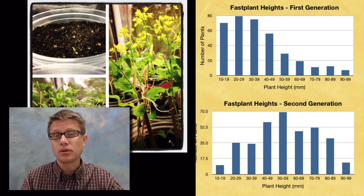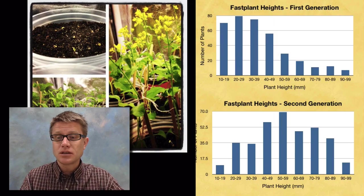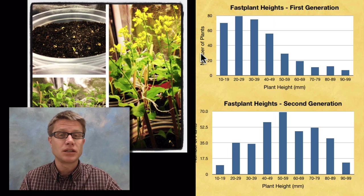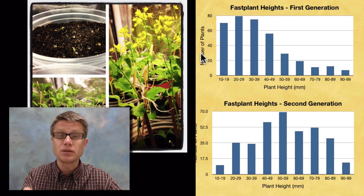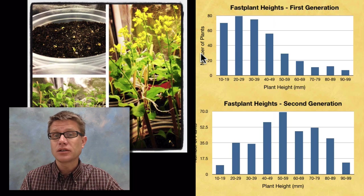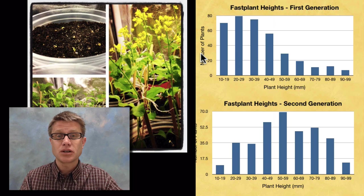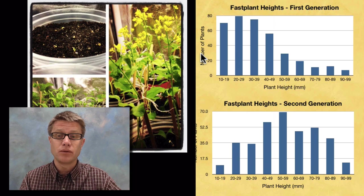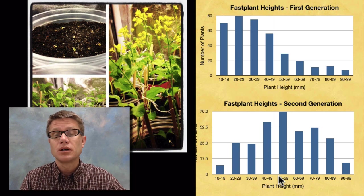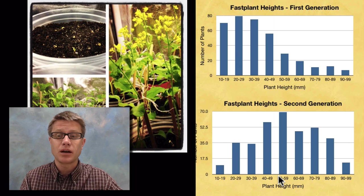In my lab, we were looking at height. So this is plant height in millimeters and the number of plants in the classroom that each have different heights. Then what you do is choose just the tallest plants to breed for the next generation. You're selecting those traits to move on. In the second generation, you can see that we're going to have much more tall plants at that same time period.